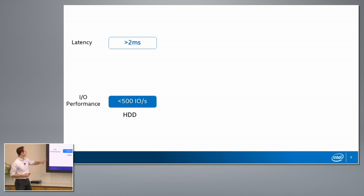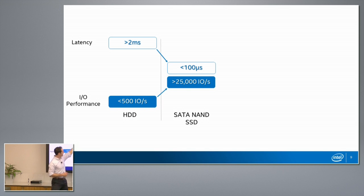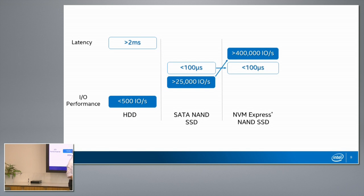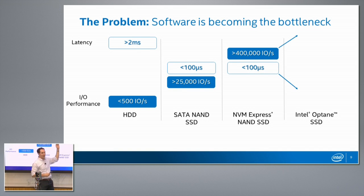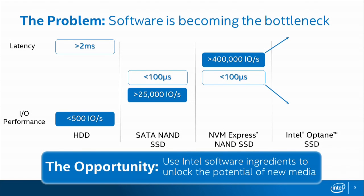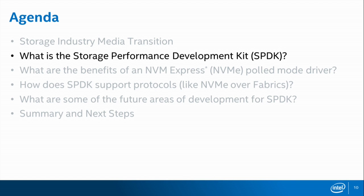We had high latency and low IOPS with disk. SATA got us to pretty good latency and a good amount of IOPS — a couple orders of magnitude improvement. NVMe arrived and we greatly increased parallelism and got a huge jump in IOPS. With Optane, those IOPS go up, latency goes down, and the problem is that software starts becoming the huge bottleneck. The way to solve that is with Intel software ingredients — taking that little green bar and shrinking it as much as possible. That's where SPDK, the Storage Performance Development Kit, comes in.